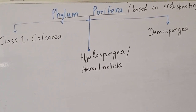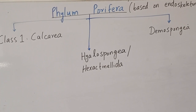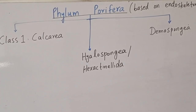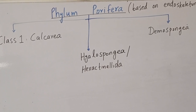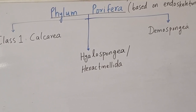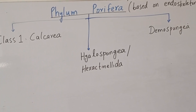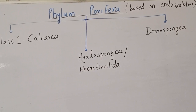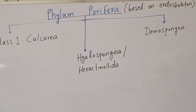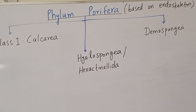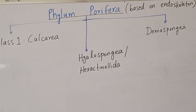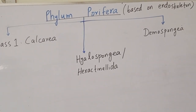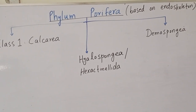Porifera is divided into three main classes. The first is Calcarea, the second is Hyalospongia, also known as Hexactinellida, and the third is Demospongia. The classification is mainly based on the endoskeleton — the spicules and spongin fibers.